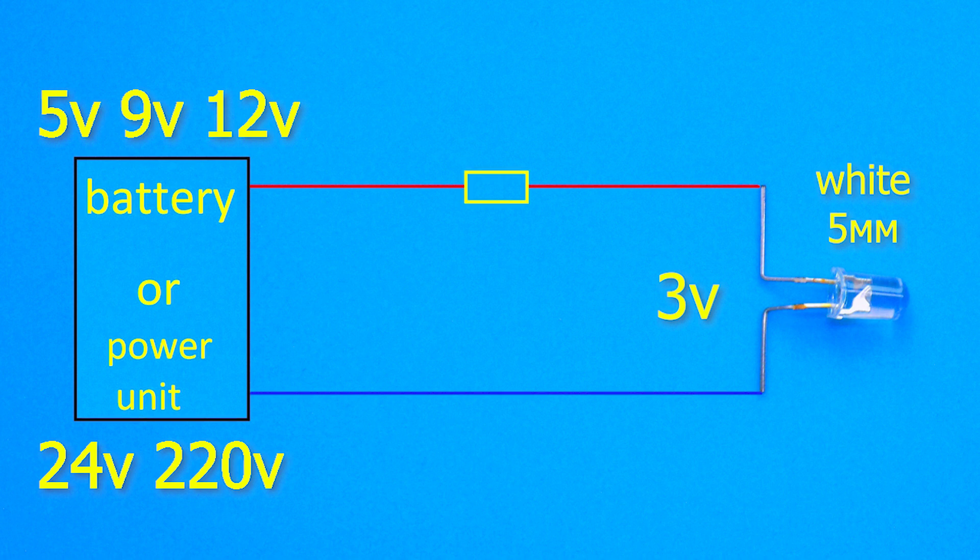The easiest way to lower the voltage is to put a resistor. It will limit the current strength, and a certain voltage will settle on it. But we do not know what resistance this resistor should be. To calculate this, you need to know how much current the LED consumes.